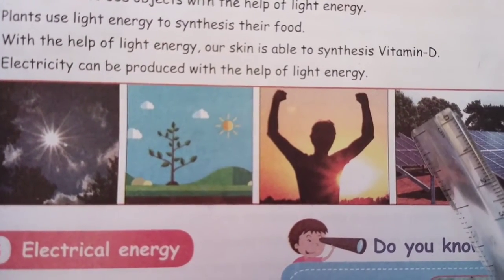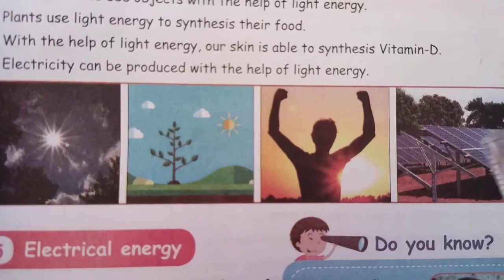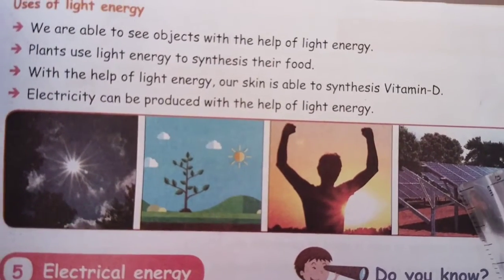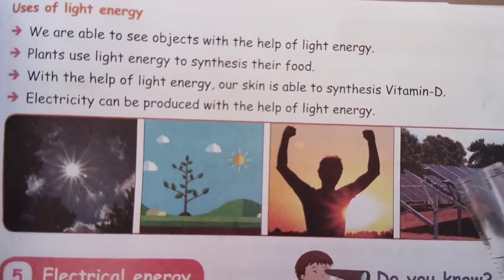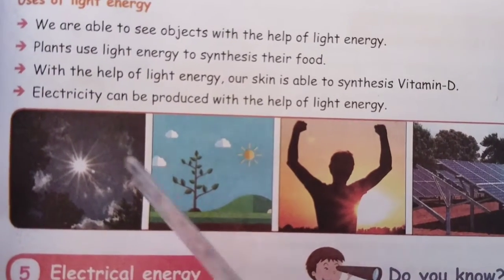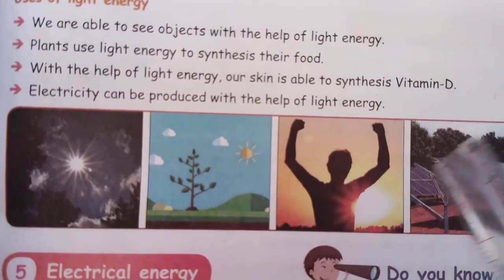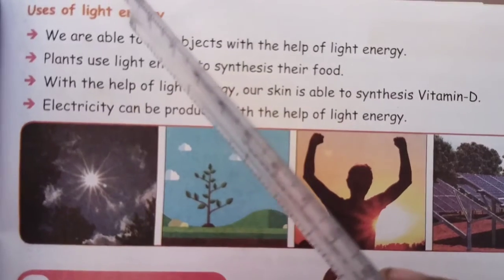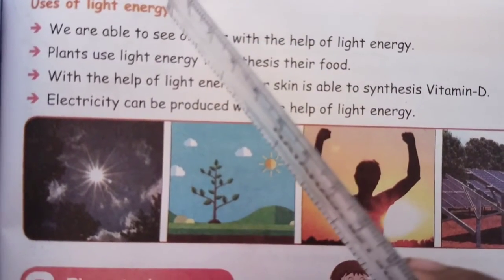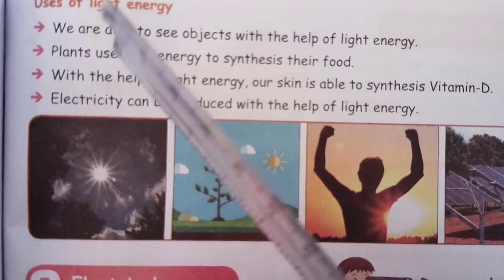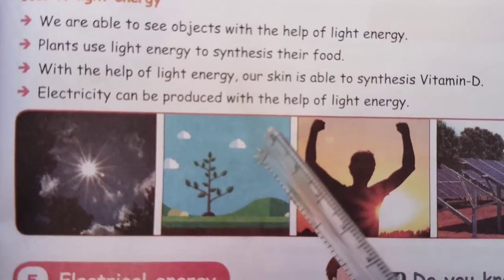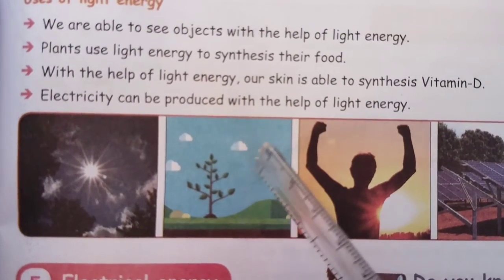Electricity is also produced with the help of light energy. This is a solar panel which is used to absorb sunlight and produce electricity. So students, these are the important uses of light energy. Light is a form of energy which is used in so many ways in our day-to-day life.